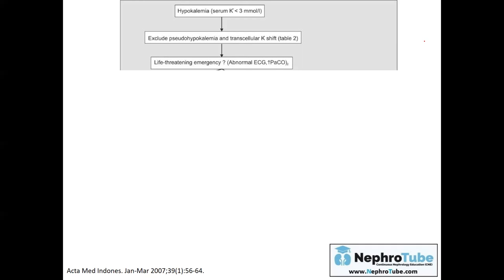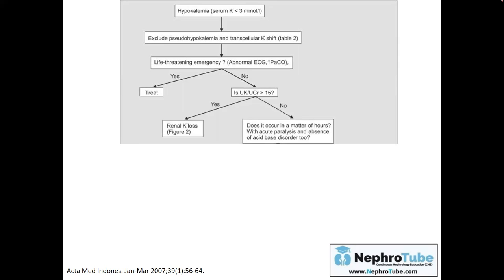If we have excluded a transcellular shift, we ask ourselves: is there any life-threatening emergency? If yes, treat. If no and the case is cold, measure the urinary potassium-to-urinary creatinine ratio. If the ratio is more than 15, there is significant potassium loss in the urine, indicating a renal cause. If the ratio is less than 15, the potassium loss is not from the kidneys.